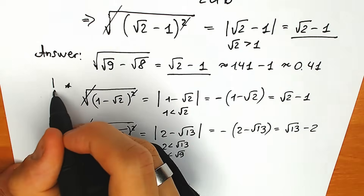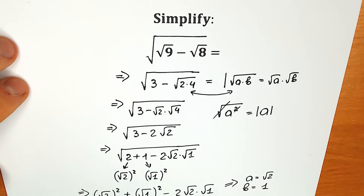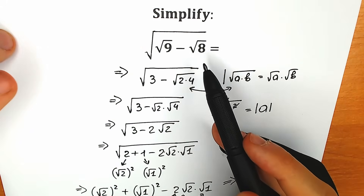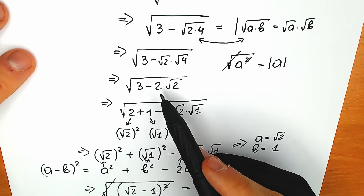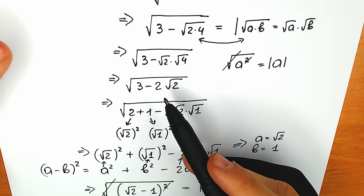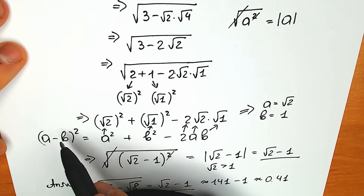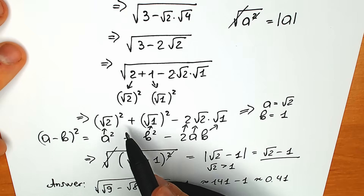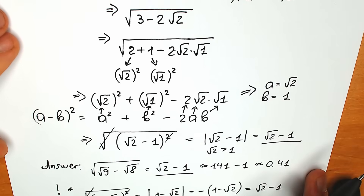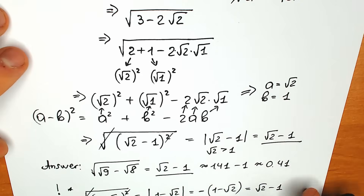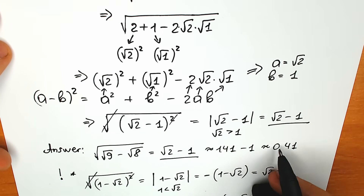I just want you to understand that absolute value is an extremely important part of this type of question. To recap the solution: many students think 1 is the answer, but it's wrong. The key is to simplify step by step and create a perfect square inside the root — recognizing the (a minus b) squared pattern — then cancel the square root with the square to get the answer. The approximate value is 0.41.